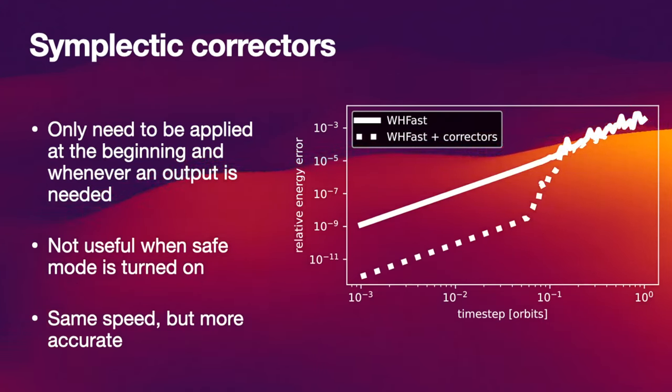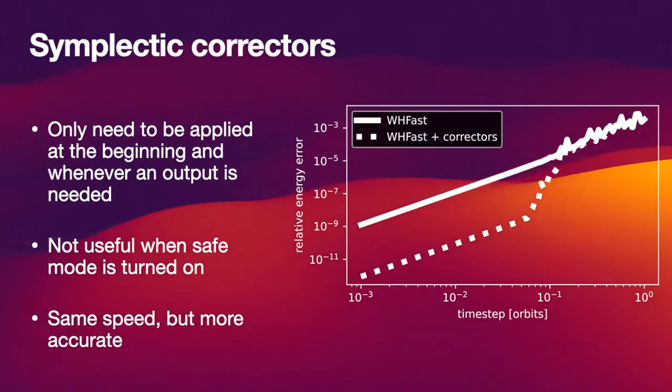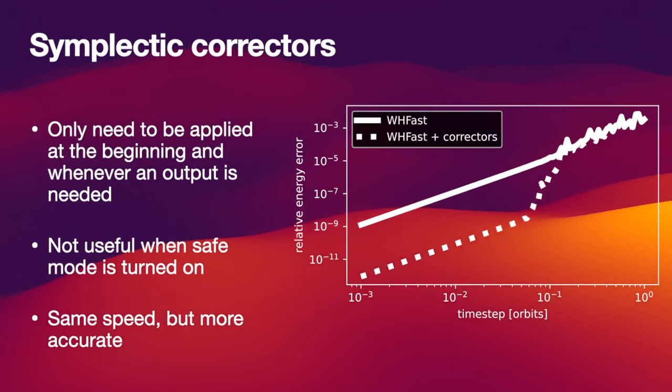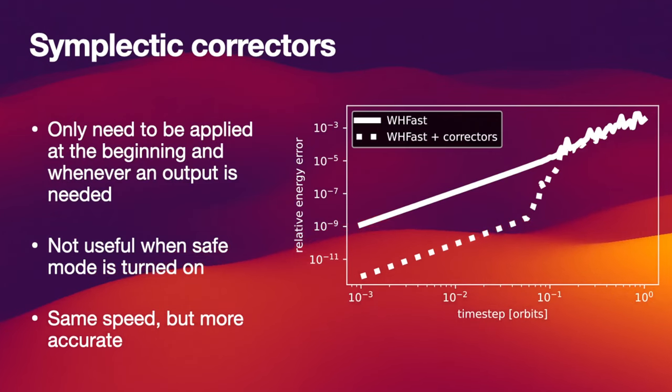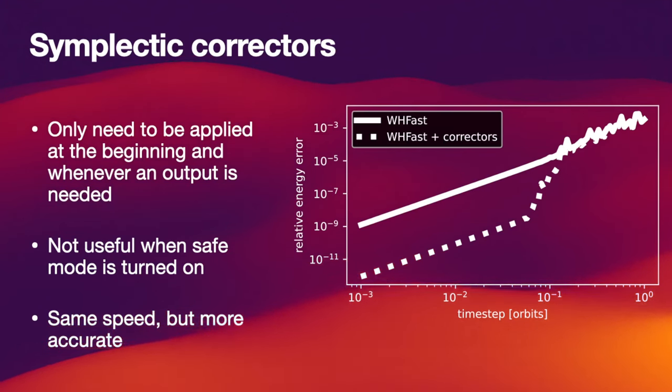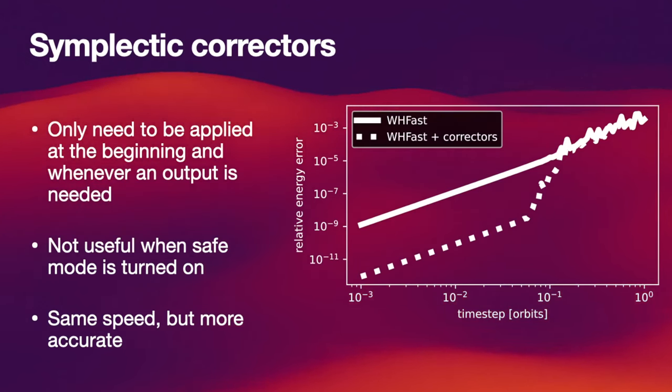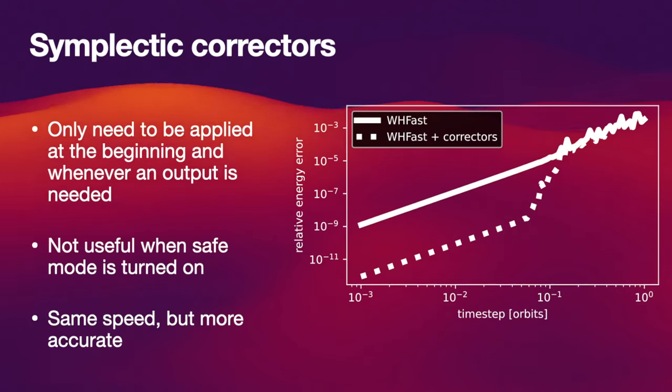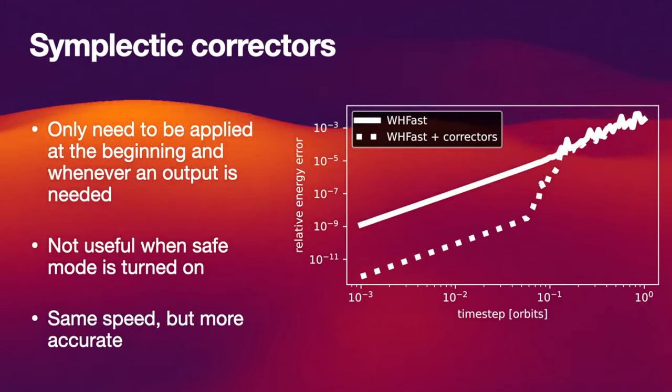But if you use them with the safe mode turned off, what you can see on the right is a typical increase in accuracy by about a factor of 1000 here. It's a factor of 1000 because the mass ratio in the specific system between the planets and the central object is about 1000. That's the case for our solar system, where Jupiter is 1000 times less massive than the Sun.